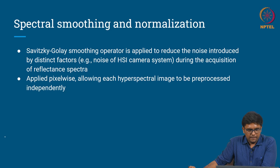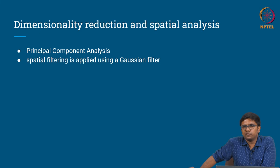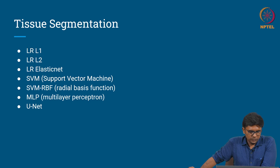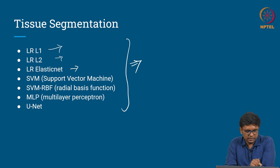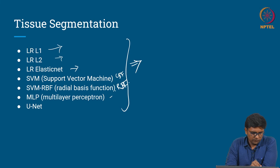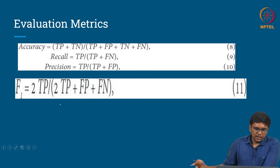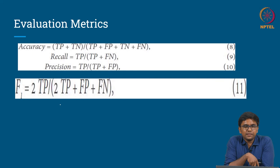They use principal component analysis for dimensional reduction and spatial analysis. For tissue segmentation they test 7 algorithms: logistic regression with L1 (LRL1), L2 (LRL2), and elastic net regularization; support vector machine with linear basis function and radial basis function; multilayer perceptron; and finally a convolutional network called U-Net. They evaluate these algorithms using 4 metrics: accuracy, recall, precision, and F1 score — where F1 is the average of recall and precision.